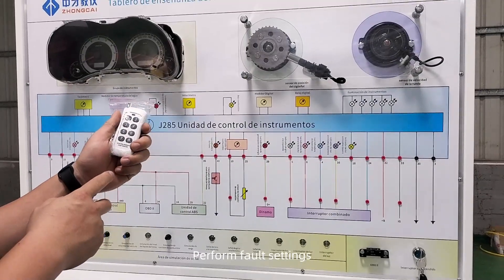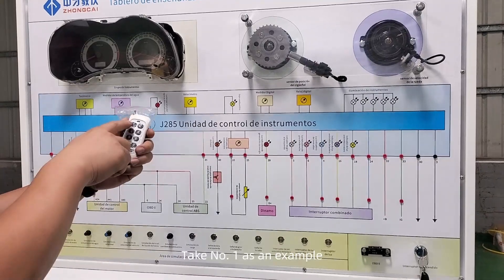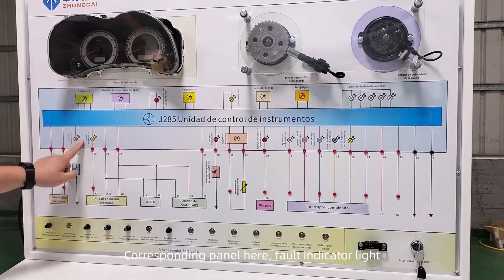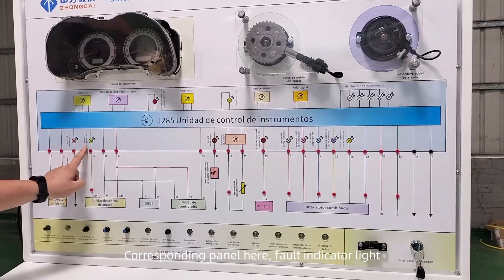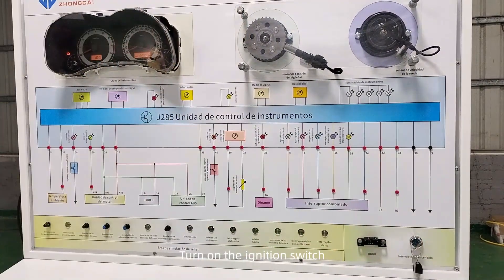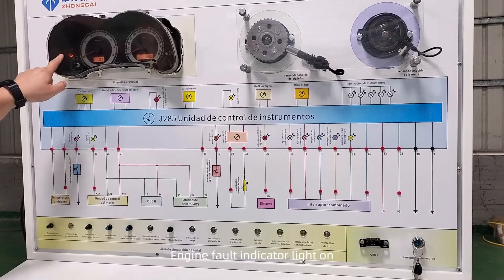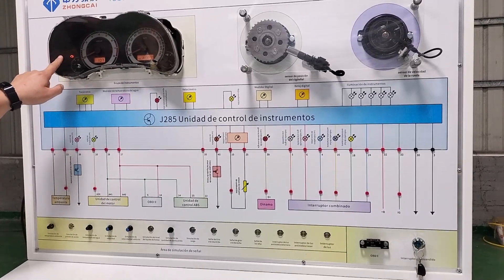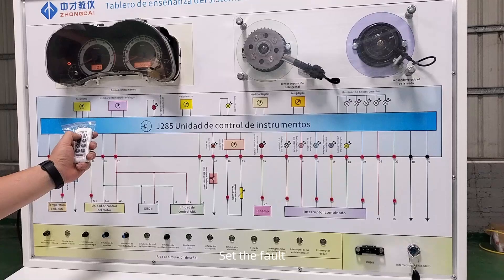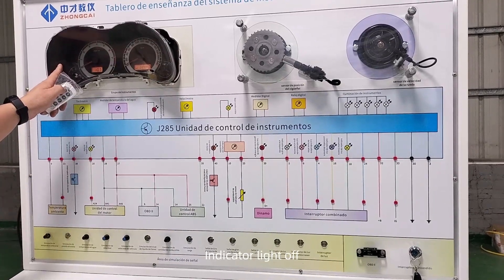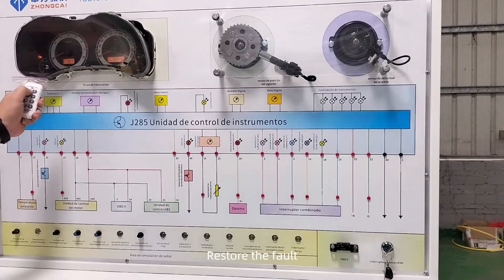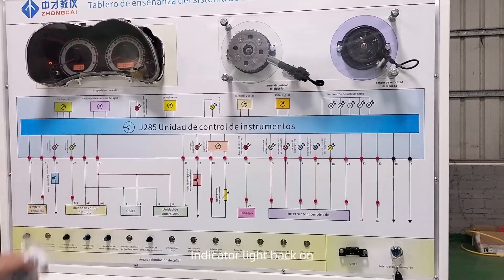Perform fault settings. Take number 1 as an example — the corresponding panel has a fault indicator light. Turn on the ignition switch — the engine fault indicator light turns on. Set the fault and the indicator light goes off. Restore the fault and the indicator light comes back on.